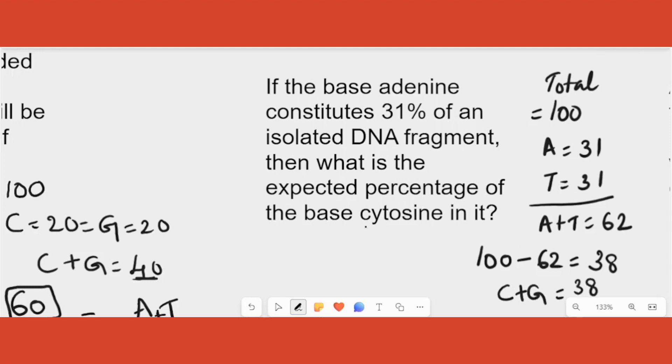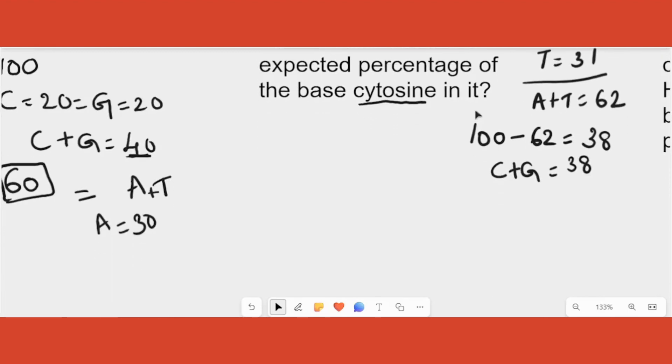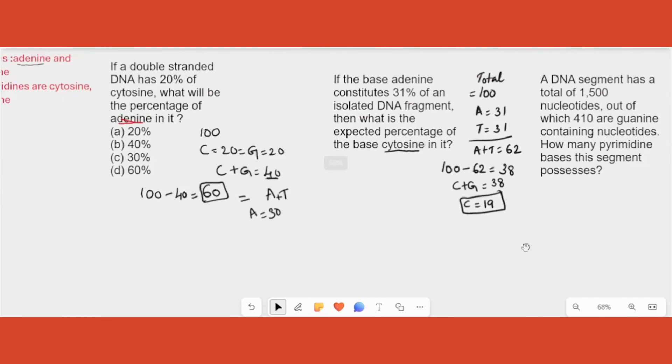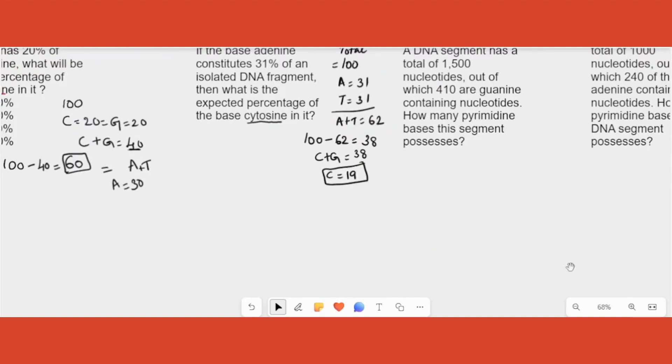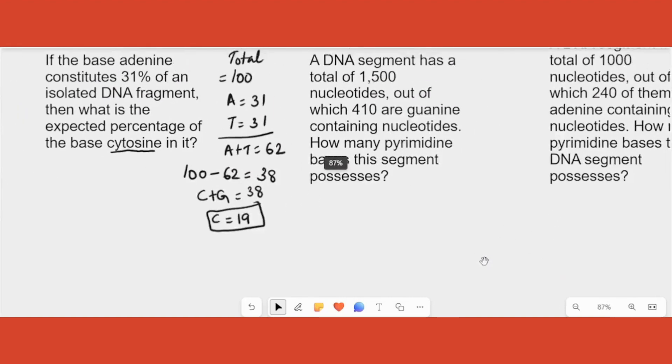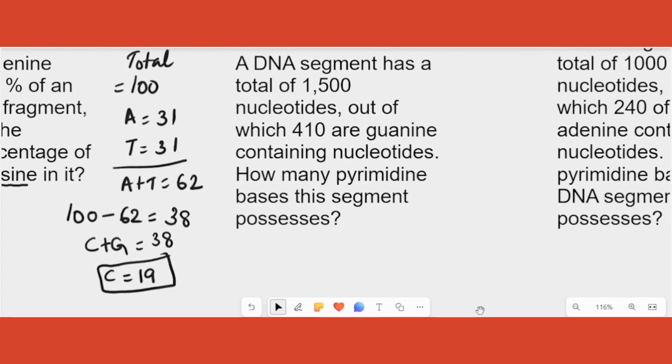Cytosine will be half of this number. C is equal to half of 38 is 19. That's it. So here no options are given. If options are given it's much easier. Otherwise also you should be able to do it. Options are usually given for this. It's an MCQ but nowadays you are getting this in the form of 2 mark question. So you should be able to easily get it. Easy calculation. Don't do any formula. It's direct.